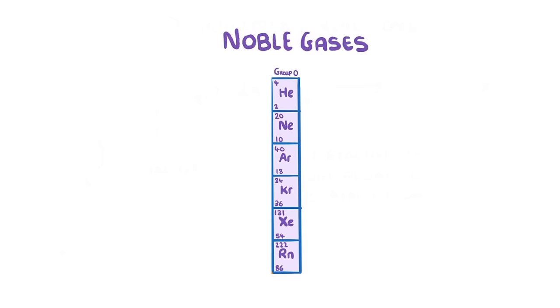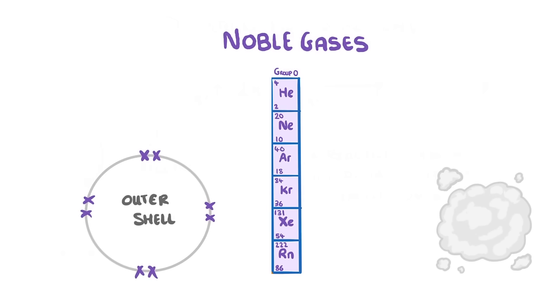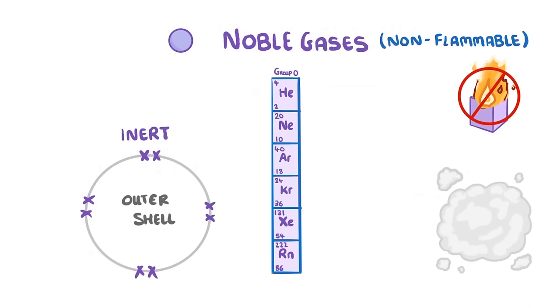Now, we were going to do an entire video on the Group 0 elements, which are also known as the noble gases, but there really isn't that much that you need to know. They all exist as colourless gases, and because they have full outer shells, they're inert, which just means that they don't really react with anything. And because they don't react with other atoms, they exist as single atoms, and they're also non-flammable, which means they can't be set on fire.